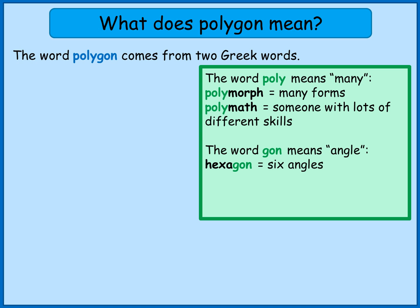And the word 'gon' roughly means angle. So you might have seen the word hexagon in maths — that's a shape. Usually people think about it as being a six-sided shape, but actually what it really means is it's a shape with six angles. Any shape you draw with six sides also has to have six angles. A hexagon is actually an example of a polygon, so the word polygon literally means a shape with many angles.